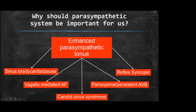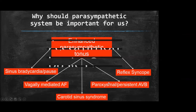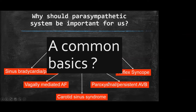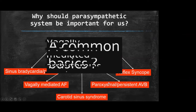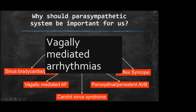Some types of sinus node dysfunction and paroxysmal or even persistent AV block may still be related to enhanced parasympathetic tonus. I think there might be a common basis for all these different clinical conditions, and we may use a definition like vagally-mediated arrhythmias to understand this potential relationship.